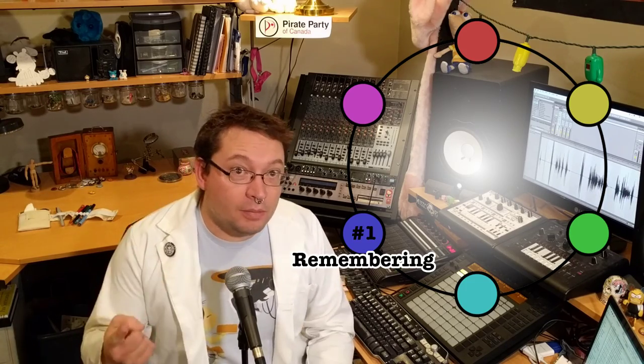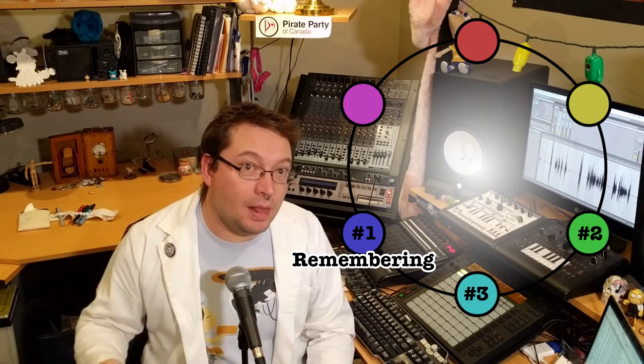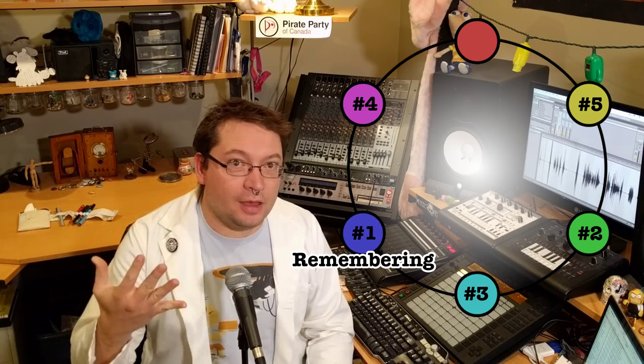Over the holidays I ran into this really fascinating mental model of how people learn called Bloom's Taxonomy. It basically illustrates six stages of learning: Remembering, Understanding, Applying, Analyze, Evaluate, and Create.